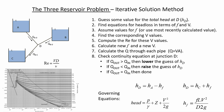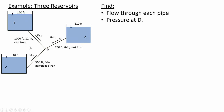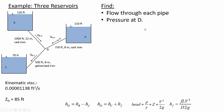This sounds complicated but it's really not — you'll get the hang of it quick. Here are the problem particulars: three reservoirs with given elevations, known pipe lengths. The materials are cast iron for pipes AD and BD, and galvanized iron for pipe DC. We have the diameters and kinematic viscosity of water in traditional units. The physical elevation at junction D is 85 feet, which we'll need to calculate the pressure — you don't need the physical elevation if you're only calculating flow rate.